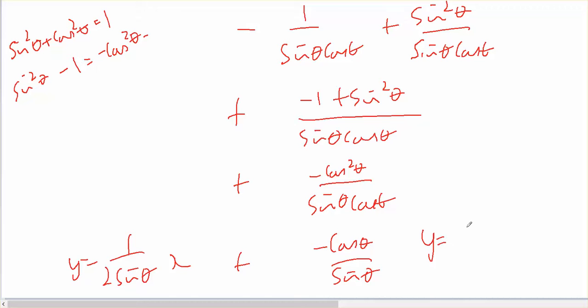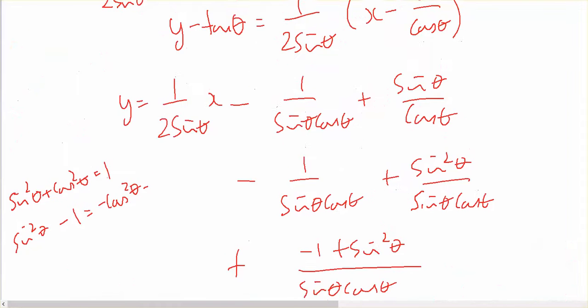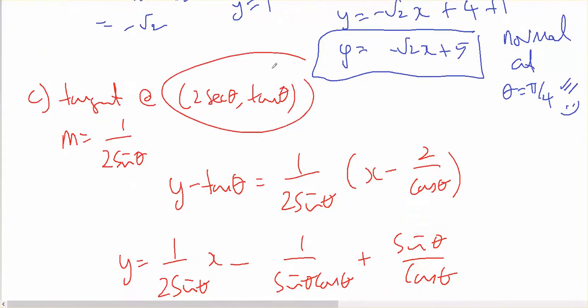y equals 1 over 2 sine theta x minus cos theta over sine theta, as being the general rule for the tangent at the point.